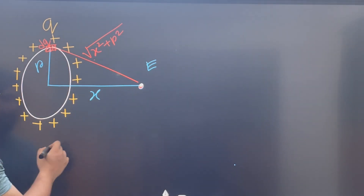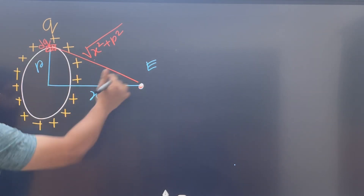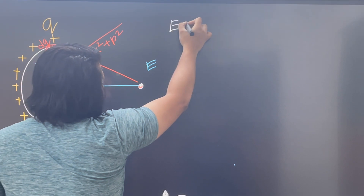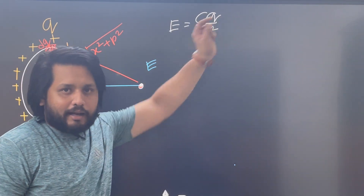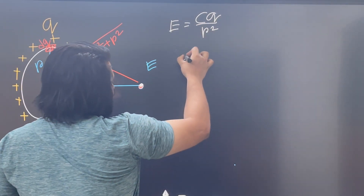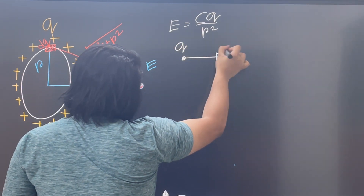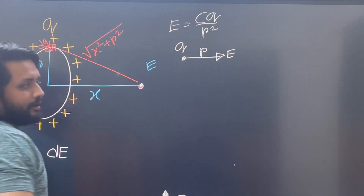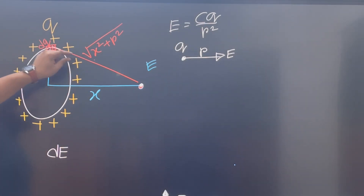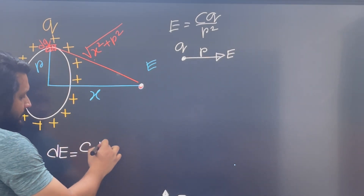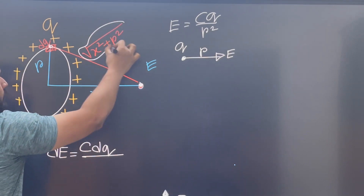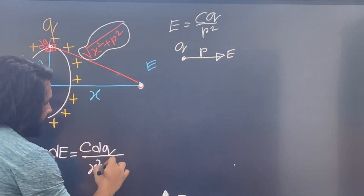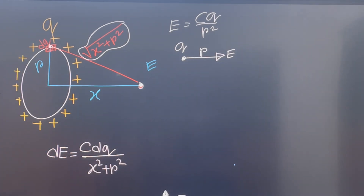The electric field dE due to the small element equals k·dq divided by r squared, where r squared is x squared plus r squared. So we set up dE equals k·dq over (x squared plus r squared).